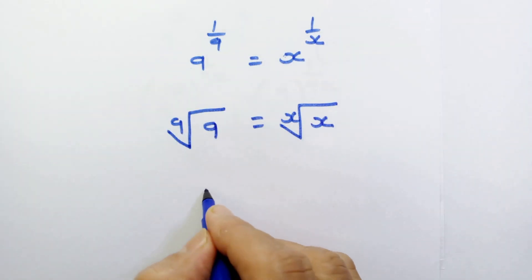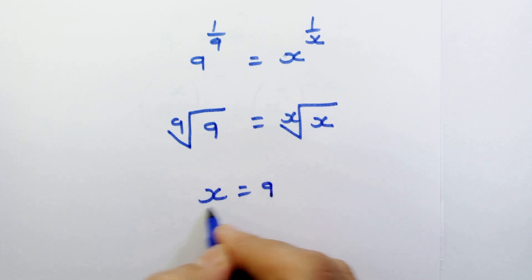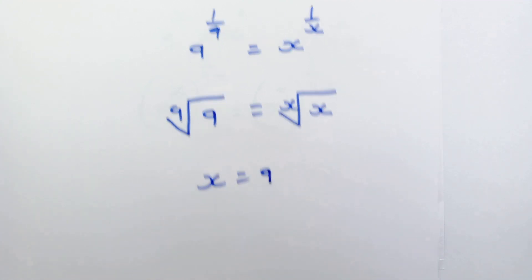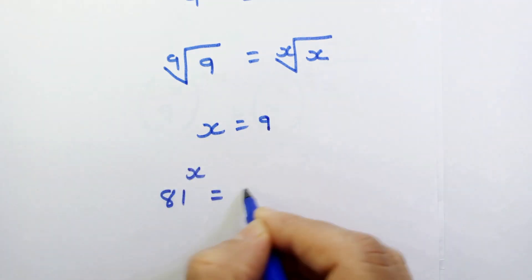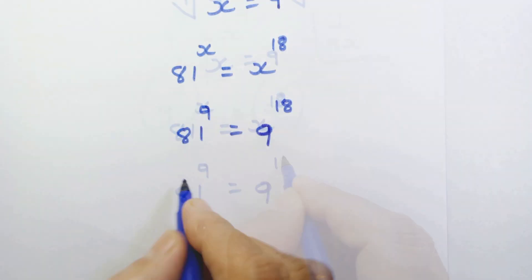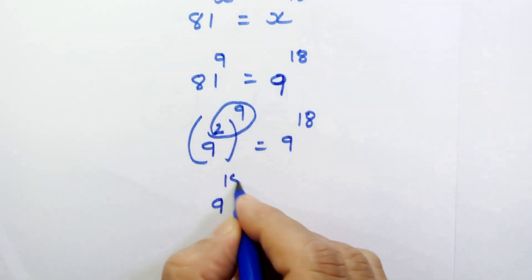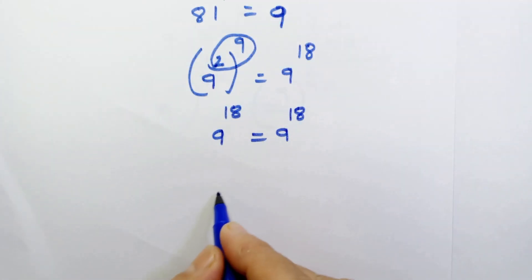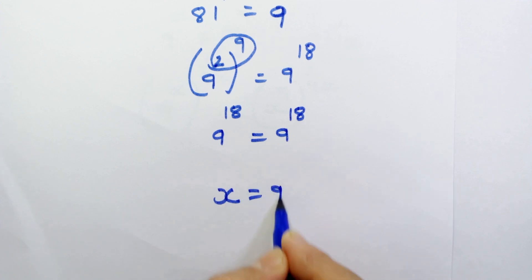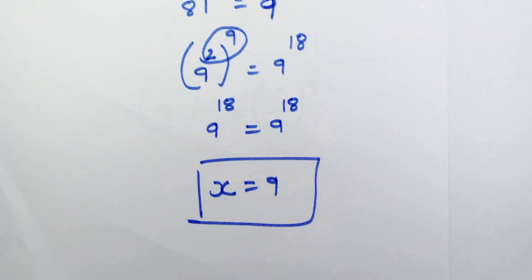So we can assume x is equal to 9. Let's put this value of x in our main equation. So x is equal to 9 is the correct answer. Thanks for watching and don't forget to subscribe. See you in the next one. Bye bye.